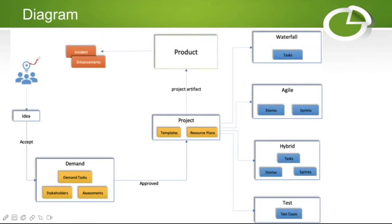This is the PPM diagram. End users have complete access to the idea portal — every user can create an idea even without a specific role. The idea manager decides which ideas to accept or reject. Once an idea is accepted, it is converted into a demand. The demand is refined — stakeholders are added, assessments are done — and the demand manager decides whether to approve or reject the demand. If approved, a project is created from the demand.